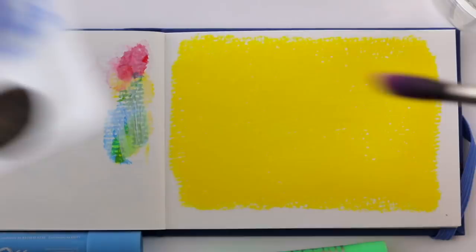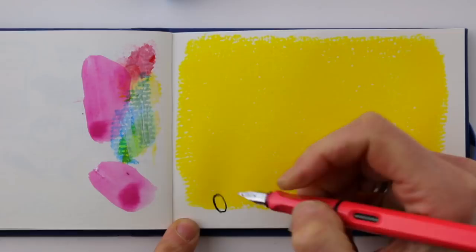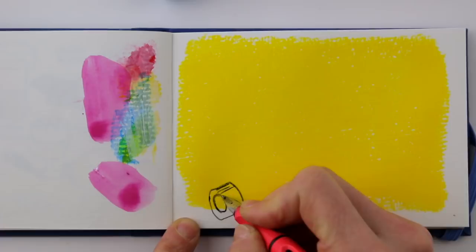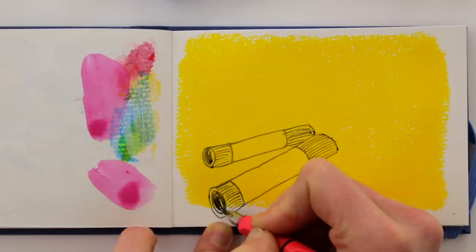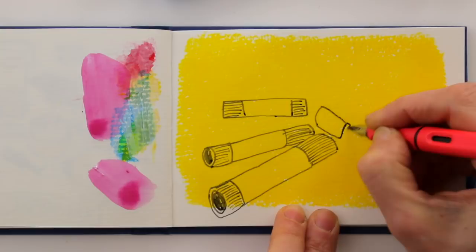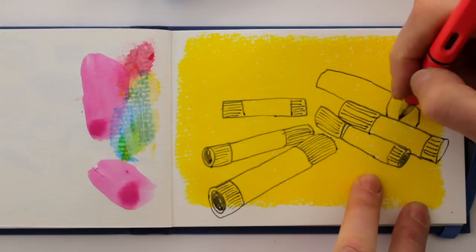So now let's use this bright yellow gouache background to draw on. The surface is a little bit shiny, but it's great to draw on with pen. So I'll just draw a bunch of sticks.